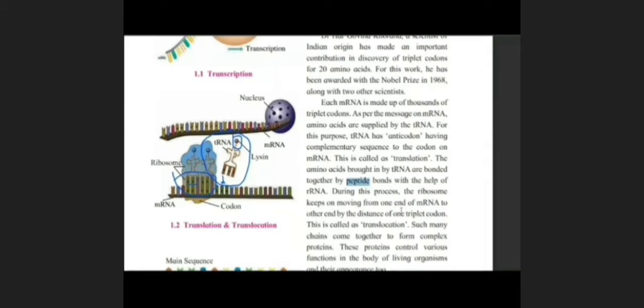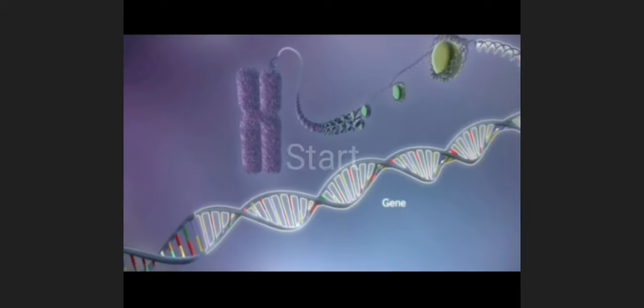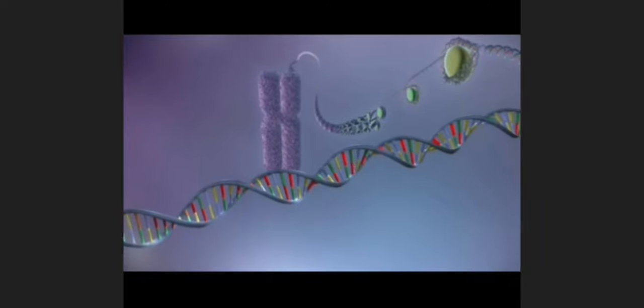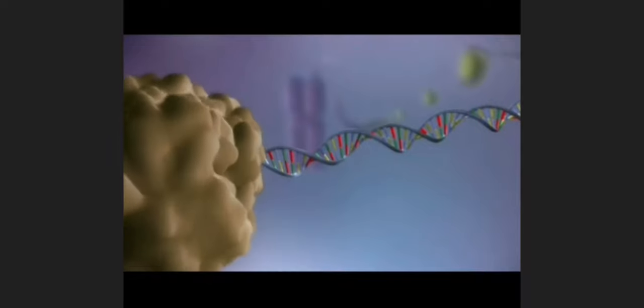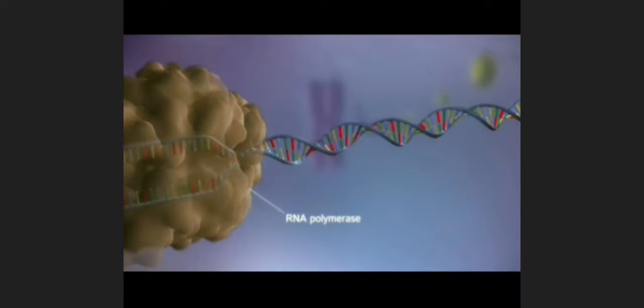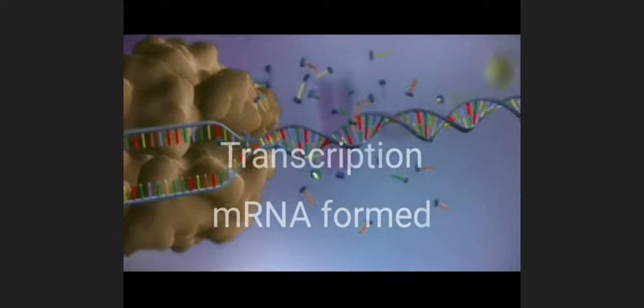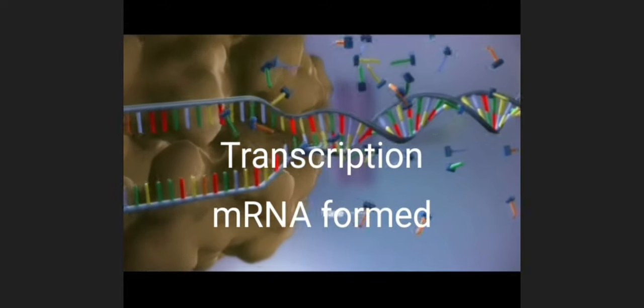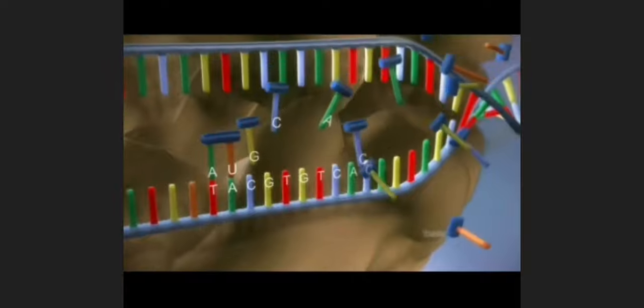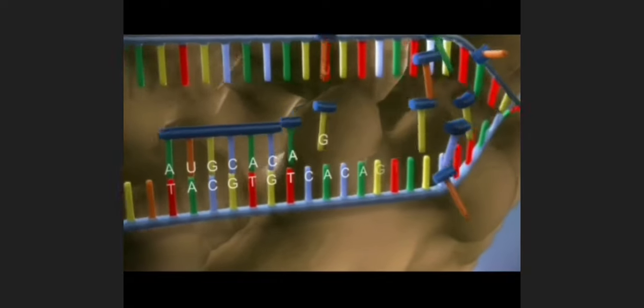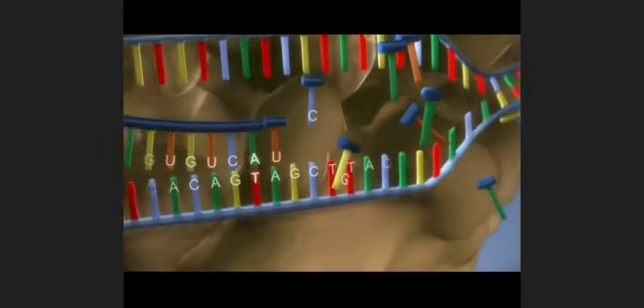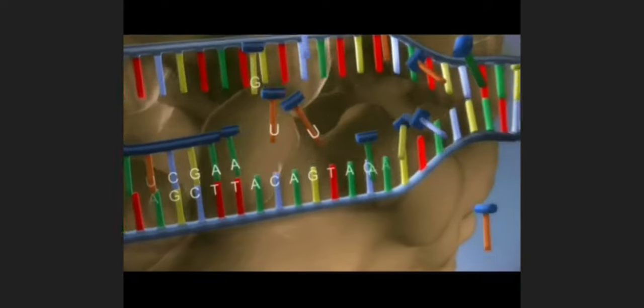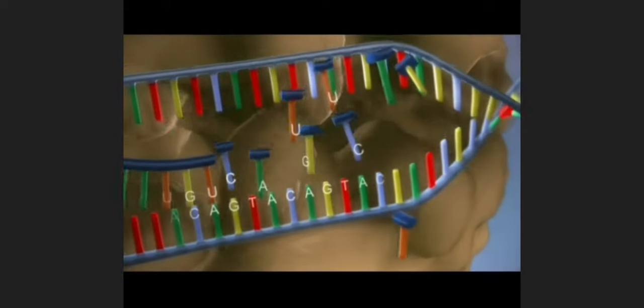Now, third type of RNA here, rRNA, that is ribosomal RNA. We know that when two molecules or two things get attached to each other, a bond is formed or a bond is necessary to attach two things. So here, when codon and anticodon they get bonded, they get bound to each other, rRNA plays a role here, ribosomal RNA. And with the help of peptide bonds, there is an attachment of codon and anticodon.